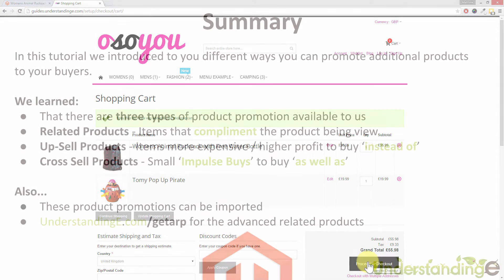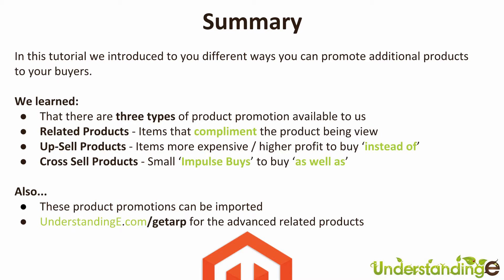To summarize: there are three types of product promotion available in Magento. Related products complement the product being viewed. Upsell products tend to be more expensive or offer a higher profit margin, and are intended as an 'instead of' purchase rather than 'as well as.' Cross-sell products are the small impulse buys shown in the cart. Just think of all those items at the checkout in a retail store — those are cross-sell products, and with Magento you can add all three to your products.